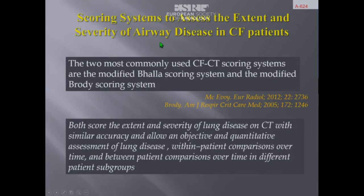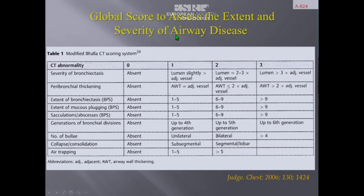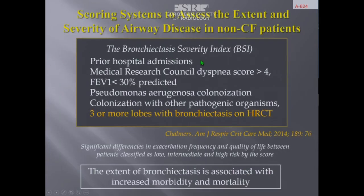For patients with cystic fibrosis, different scoring systems have been developed. The two most commonly used are the modified Bhalla scoring system and the modified Brody scoring system; both score the extent and severity of lung disease on CT with similar accuracy, allowing objective and quantitative assessment. For patients with non-cystic fibrosis bronchiectasis, there is the bronchiectasis severity index, which includes clinical, functional, and bacteriologic parameters, with only one radiologic criterion: three or more lobes with bronchiectasis on HRCT. The take-home message is that the extent of bronchiectasis is associated with increased morbidity and mortality according to the study by Chalmers and others.